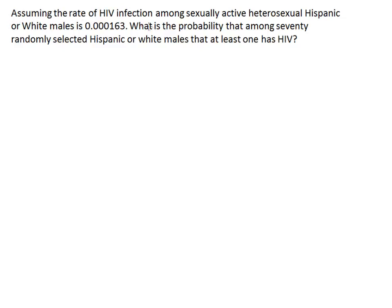Assuming the rate of HIV infection among sexually active heterosexual Hispanic or white males is 0.000163, what is the probability that among 70 randomly selected Hispanic or white males, at least one has HIV?